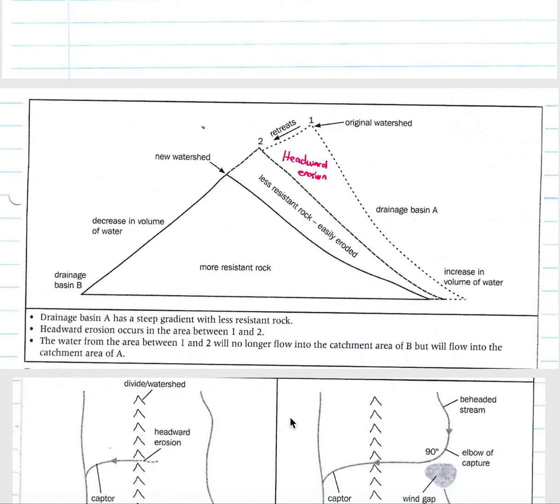Then we look at abstraction and river capture. We can see we have a drainage basin A and a drainage basin B on the left over here. Drainage basin A has a steeper gradient and less resistant rock, which means that there's more erosion and your river retreats. By headward erosion, your river retreats from 0.1 to 0.2. Your watershed then shifts by a process known as abstraction. You have an increase in the volume of water as you are now capturing this piece of land where this water would have flowed into basin B will now flow into basin A. As I've said, headward erosion occurs between 1 and 2 and the water from area 1 and 2 will no longer flow into B but flow into A.